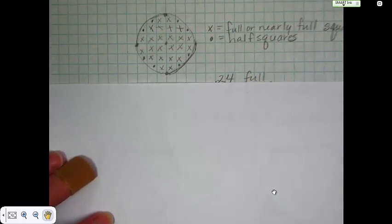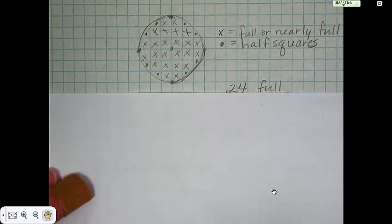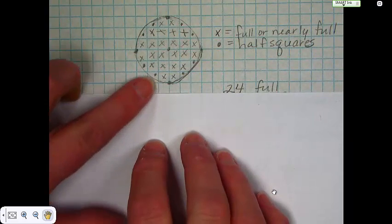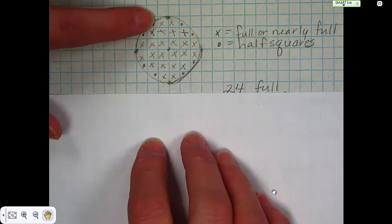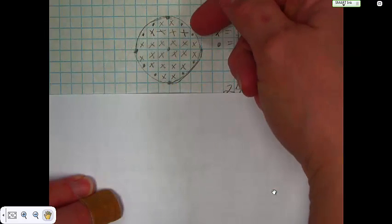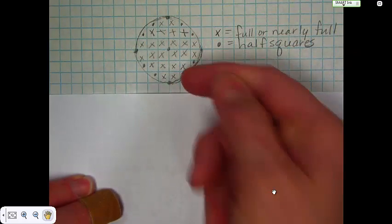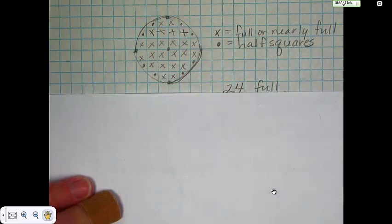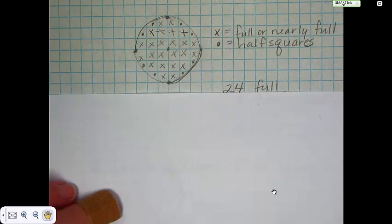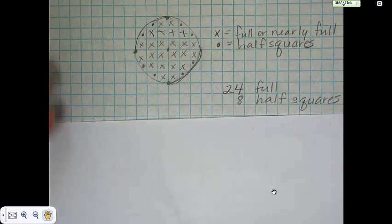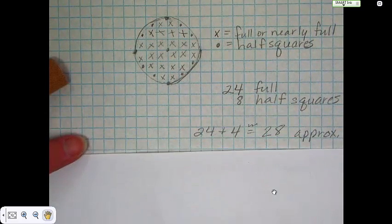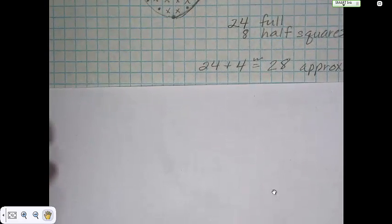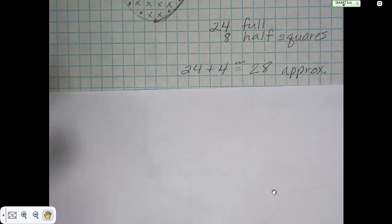Then you have to look at the half squares. So you've got 1, 2, 3, 4, 5, 6, 7, 8 half squares, which ends up to be... Each half square is a half of a whole, so you divide it by 2. So you end up with 4 full squares. So 24 full, 8 half squares ends up to be 24 plus 4, which is about 28 approximately.